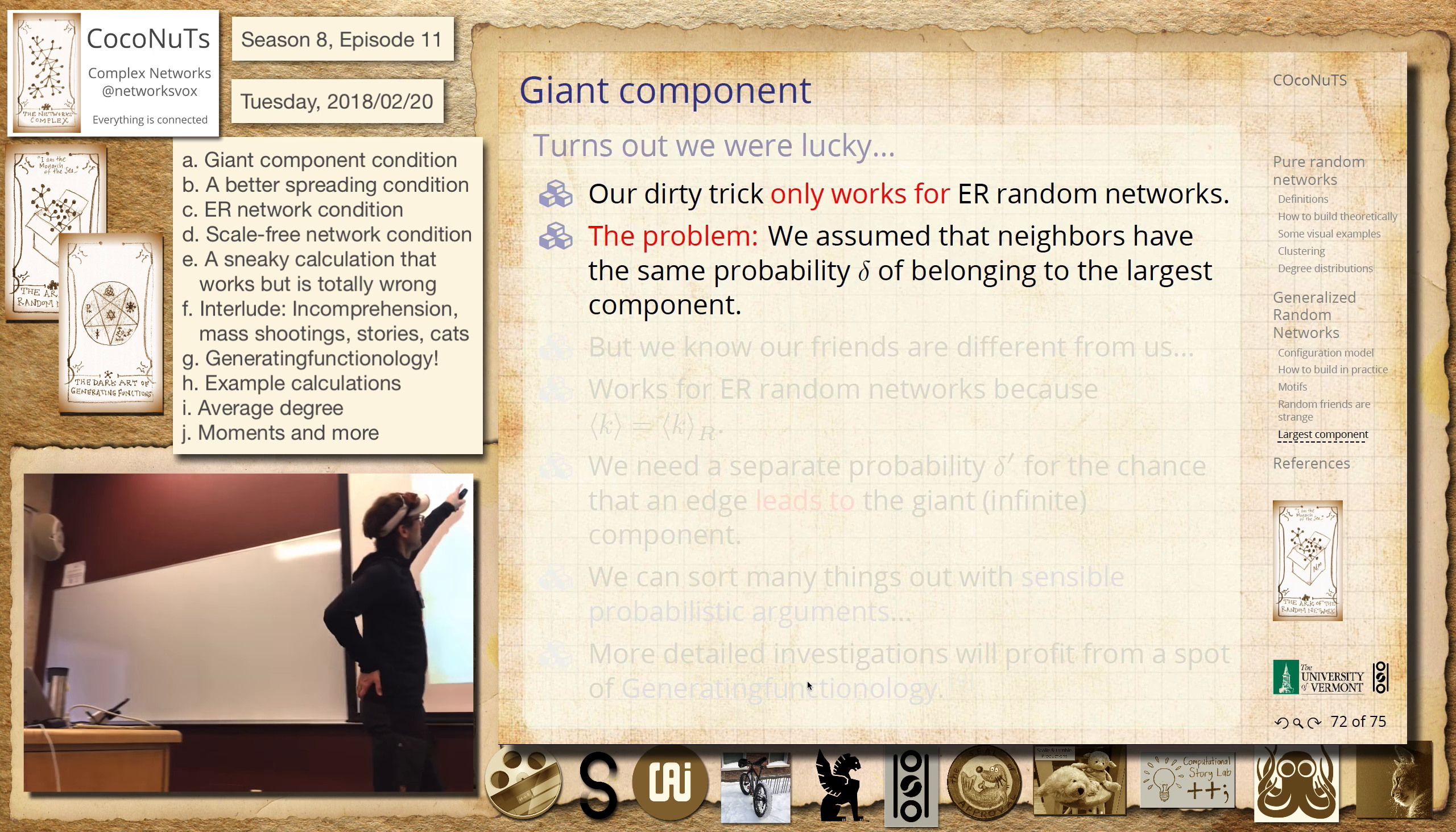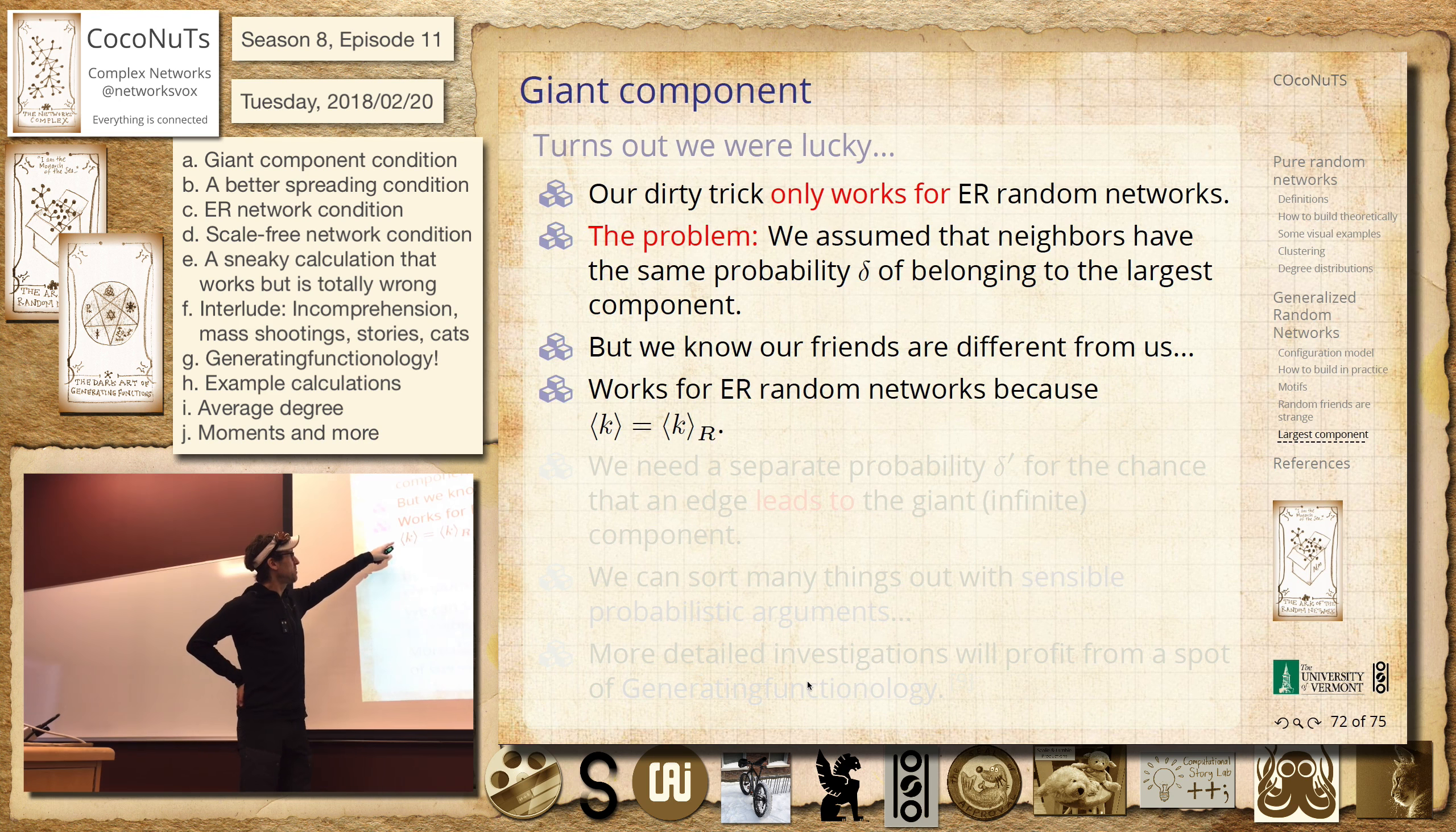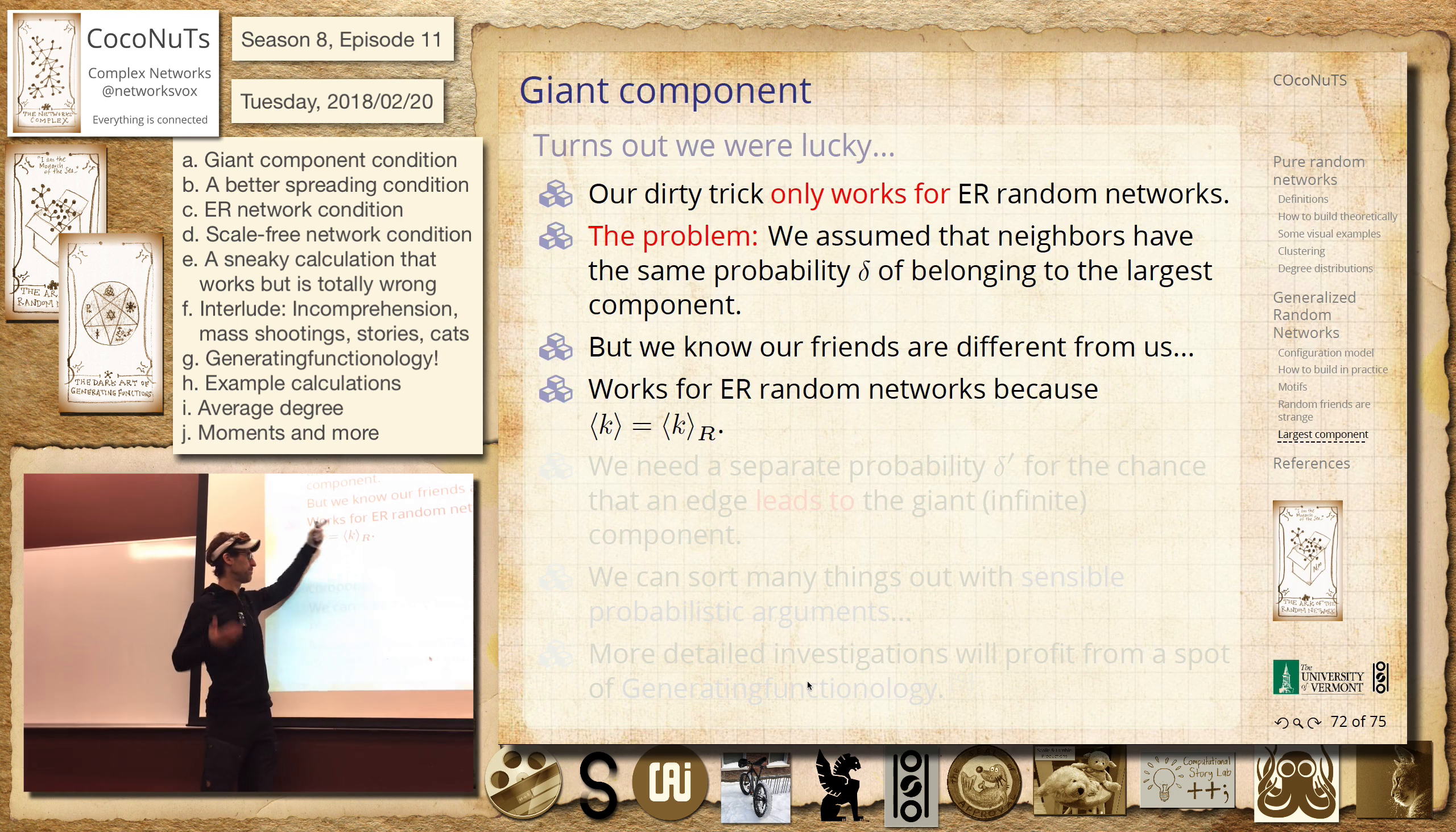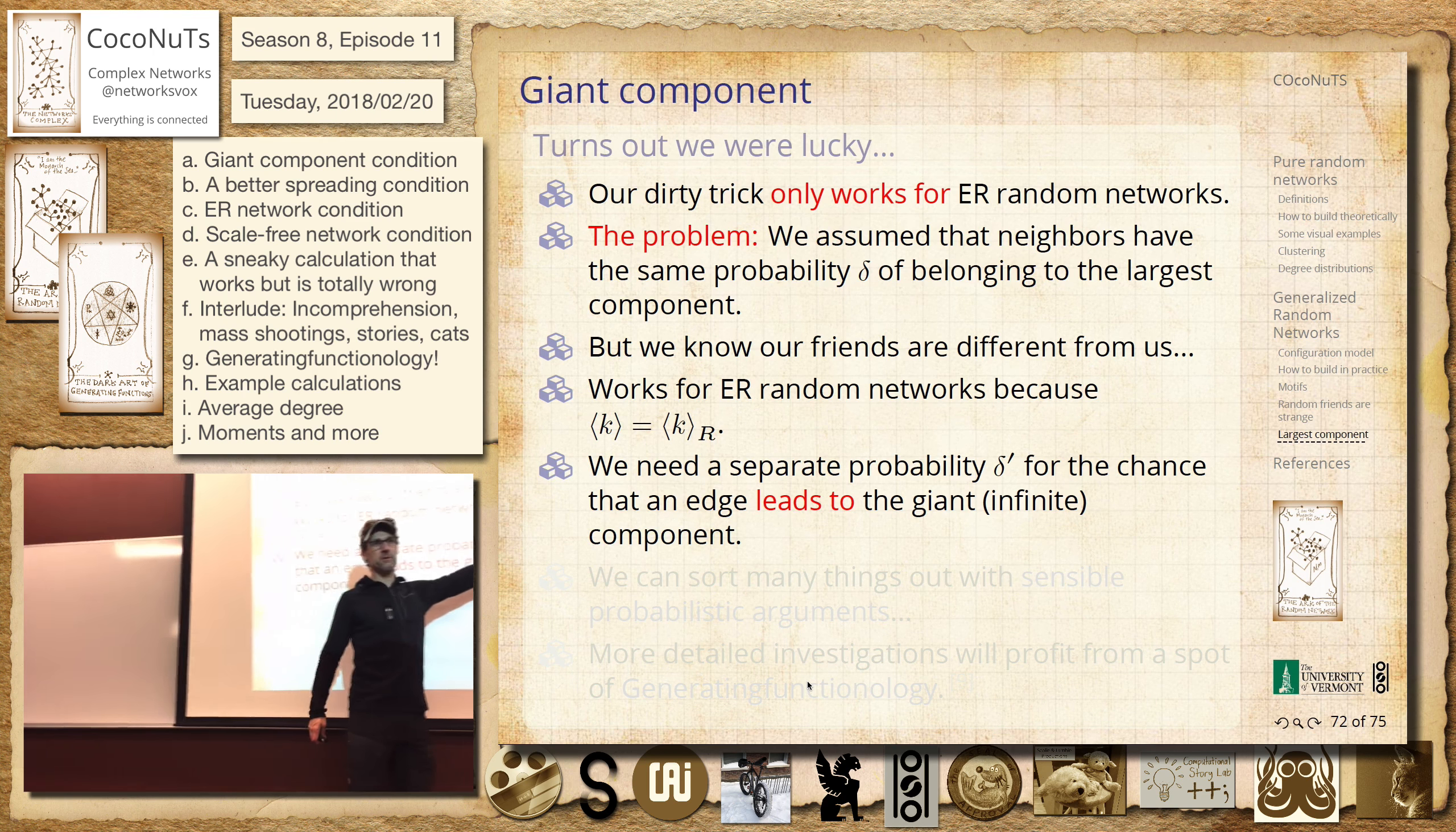So, and the reason is that those two deltas are the same only for Poisson degree distributed networks. Right? So, I mean, I've said it out loud. This is exactly the thing. So, we know our friends are different. So, it works because the average degree of a node randomly selected is the same as the average number of other friends of a node that's randomly selected by running along an edge. So, we need another one. We need a delta prime, actually. Right? We need something else.